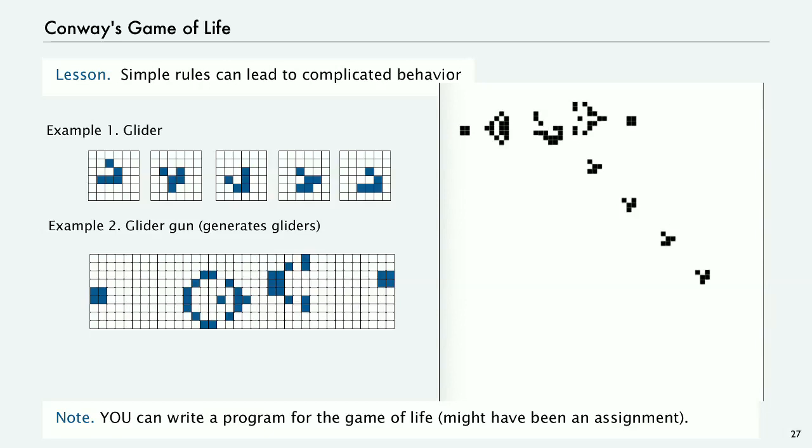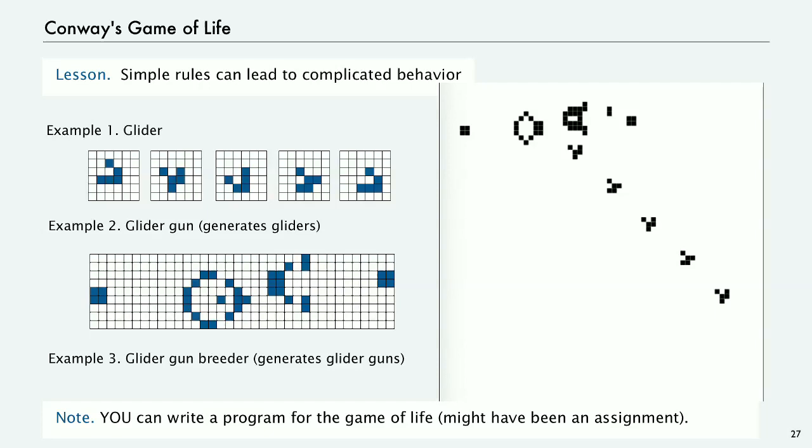And when you think about it, that's actually pretty profound that we can get that kind of behavior from such simple rules. Those gliders out there, that's transmitting information. And if we can transmit information, maybe there's more that we can do. And there's another level. There's a glider gun breeder that generates glider guns that all generate gliders. Extremely complex behavior.